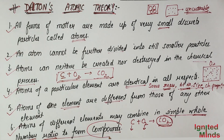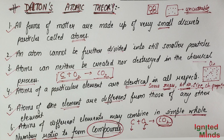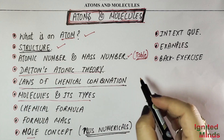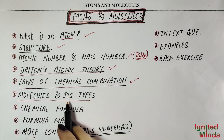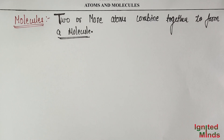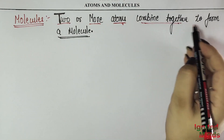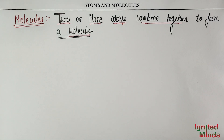We have a new word here — compound. So let's discuss what compounds and molecules are, as many students have difficulty with these concepts. We will clearly explain molecules, compounds, atoms, and elements. A molecule is formed when two or more atoms combine together. Molecules are a cluster of atoms.